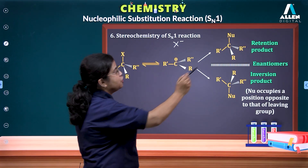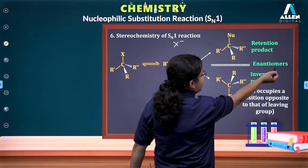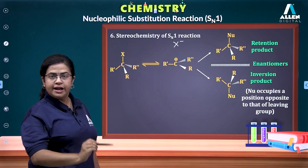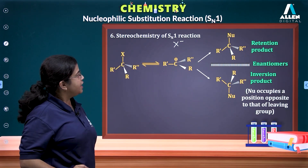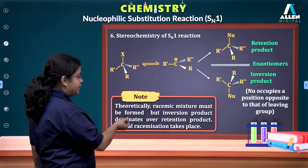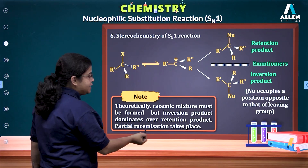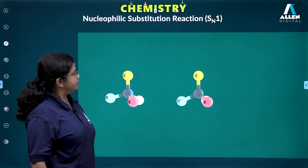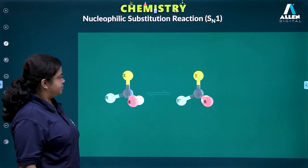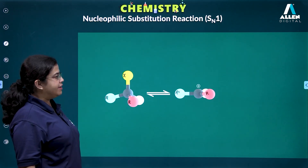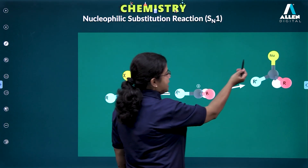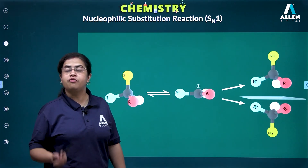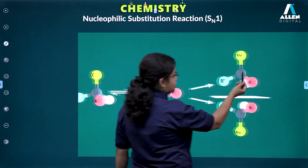Though we get a mixture of two enantiomers — the retention product and the inversion product — it is the inversion product that dominates slightly over the retention product. The carbocation formed by heterolytic cleavage is planar (sp2), so it can be attacked from the top as well as from the bottom, giving a mixture of retention and inversion products.